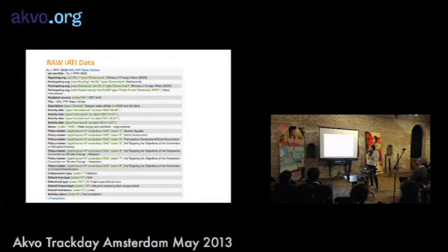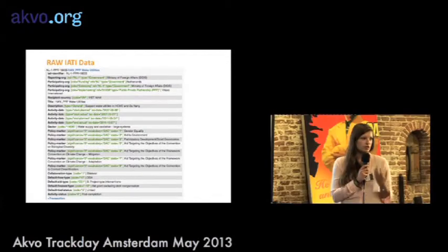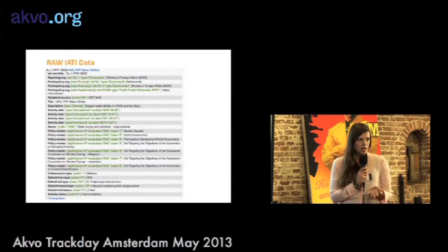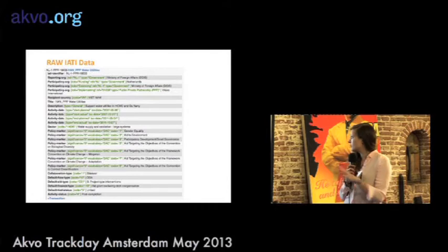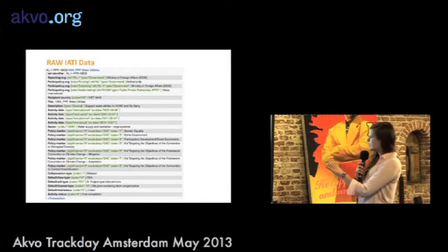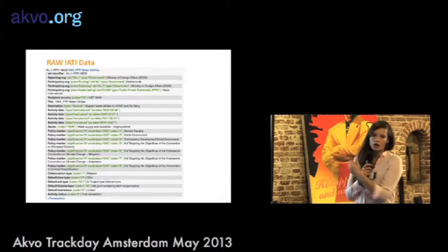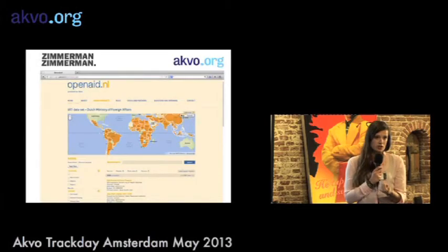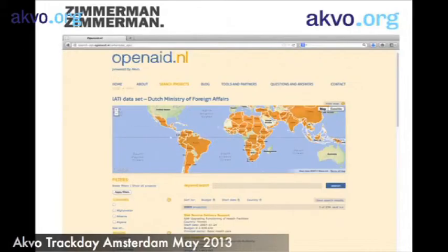At OpenAid.nl the IATI data of the Dutch government is visualized. In 2011 they published their IATI dataset and together with Zimmerman and Zimmerman we visualized it on this platform. You can search by country, click on a country to see which aid activities the Dutch government is sponsoring — for example in Kenya. You can also select by sector or type in keywords to see what has been published.